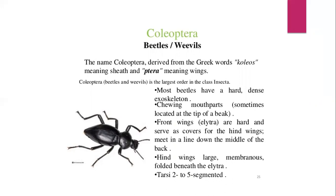The largest family is Curculionidae — the weevils — where 83,000 member species belong to this order. Beetles are found in almost every habitat except the sea and polar regions and interact with ecosystems in several ways. The name Coleoptera is derived from the Greek word 'kolios' meaning sheath and 'tera' meaning wings — sheath-like wings. The hard wings present in these insects are called sheath wings, especially in beetles and weevils. Most beetles have a hard, dense exoskeleton.